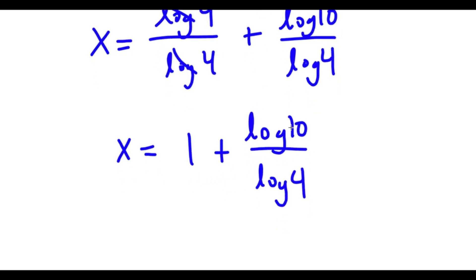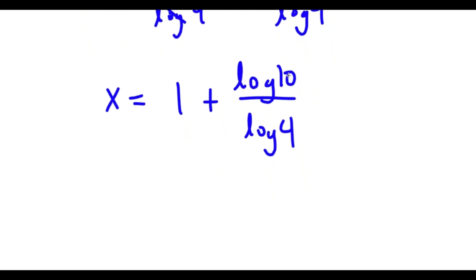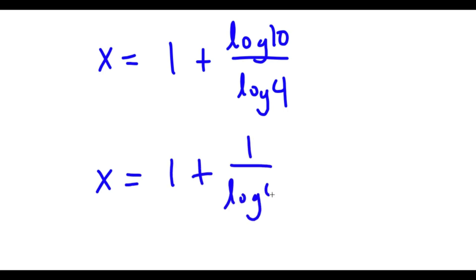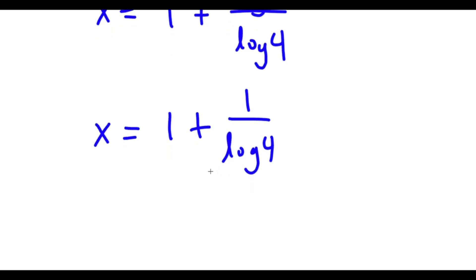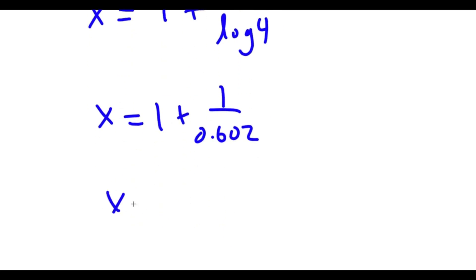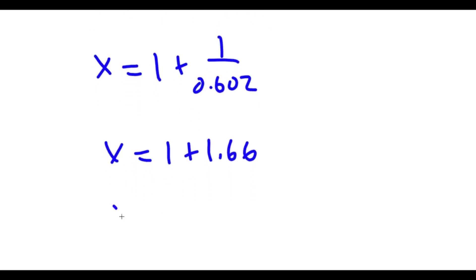Now log 10 is equal to 1. So x is equal to 1 plus 1 over log 4. And log 4 is equal to 0.602. So x equals 1 plus 1 over 0.602, which is 1 plus 1.66, meaning x is equal to 2.66.